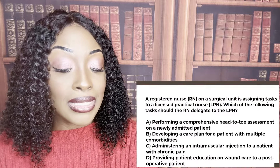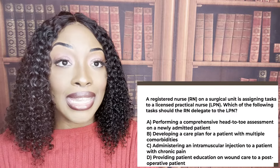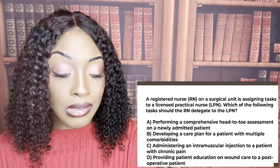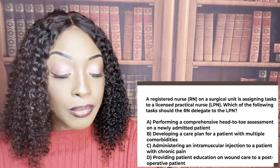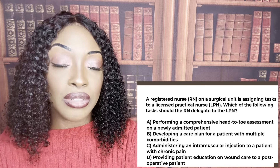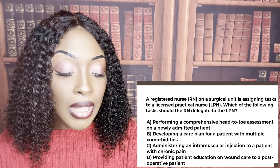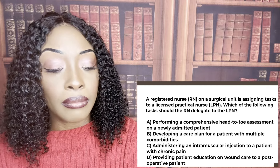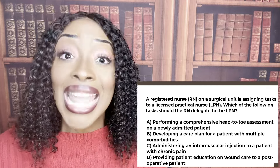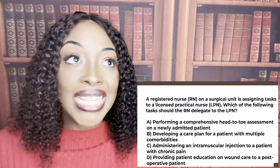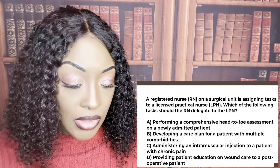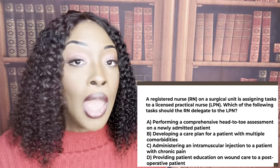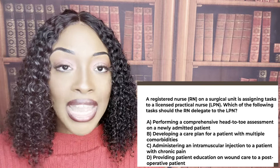Final question. A registered nurse on a surgical unit is assigning tasks to an LPN. Which task should the RN delegate to the LPN? Options: A — performing a comprehensive head-to-toe assessment on a newly admitted patient; B — developing a care plan for a patient with multiple comorbidities; C — administering an IM injection to a patient in chronic pain; or D — providing patient education on wound care to a post-op patient. The answer is C — giving an IM injection to a patient in chronic pain. Chronic means this has been going on a long time — nothing new, most stable patient. A — 'comprehensive' means in-depth; that's the RN. B — only the RN can develop care plans; LPNs and UAPs follow the care plan. D — teaching is always the RN.